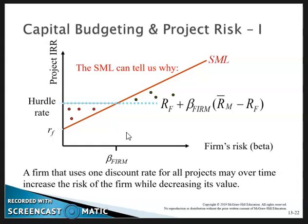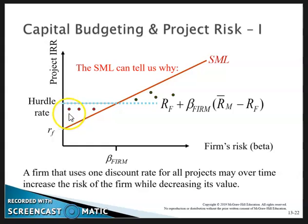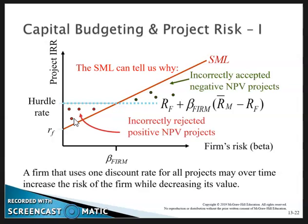If we use only one rate of return — the firm's beta return — as our hurdle rate, we will incorrectly reject low-beta projects and incorrectly accept high-beta projects. The low-beta projects would have positive NPVs and the high-beta projects would have negative NPVs. This is why we need to adjust for the risk of each individual project.